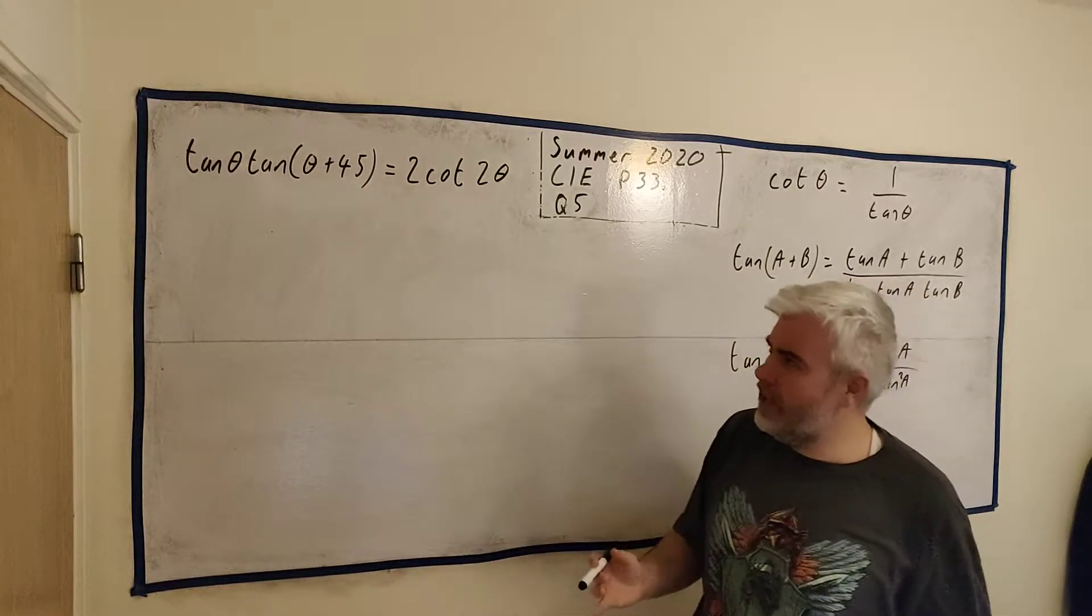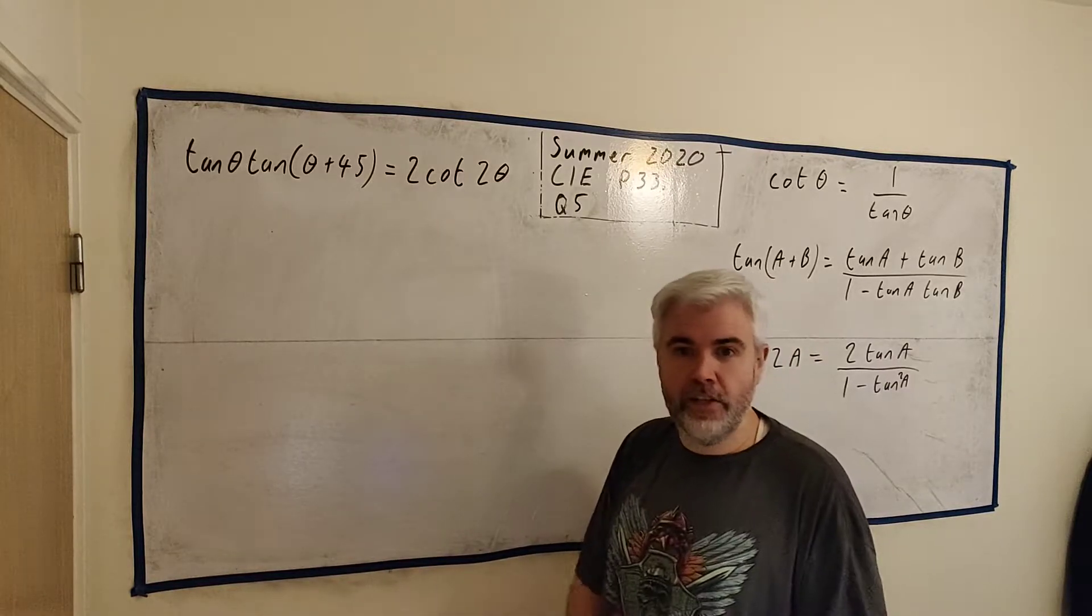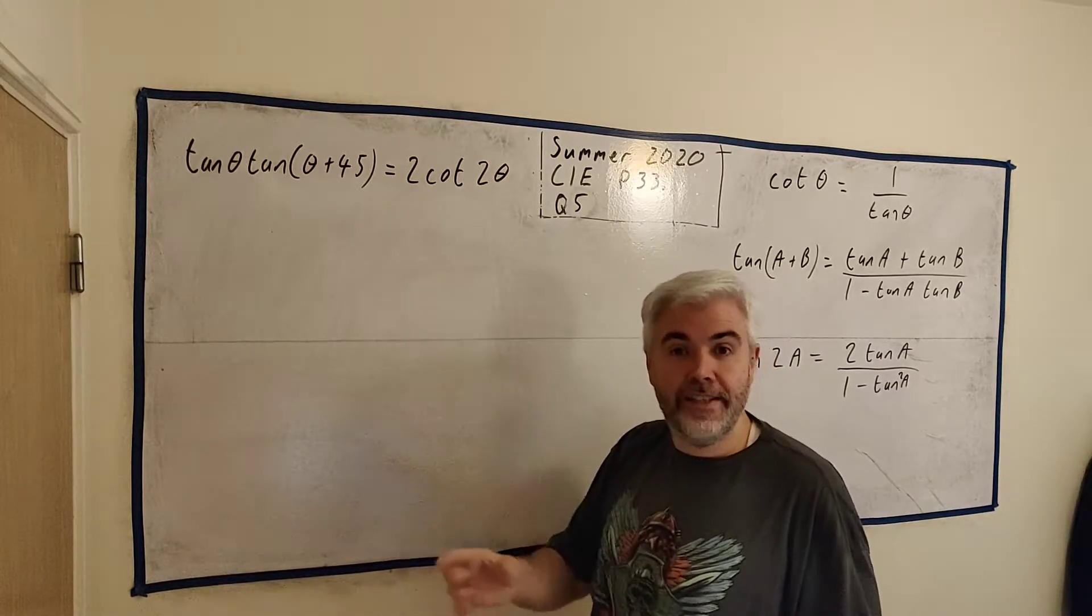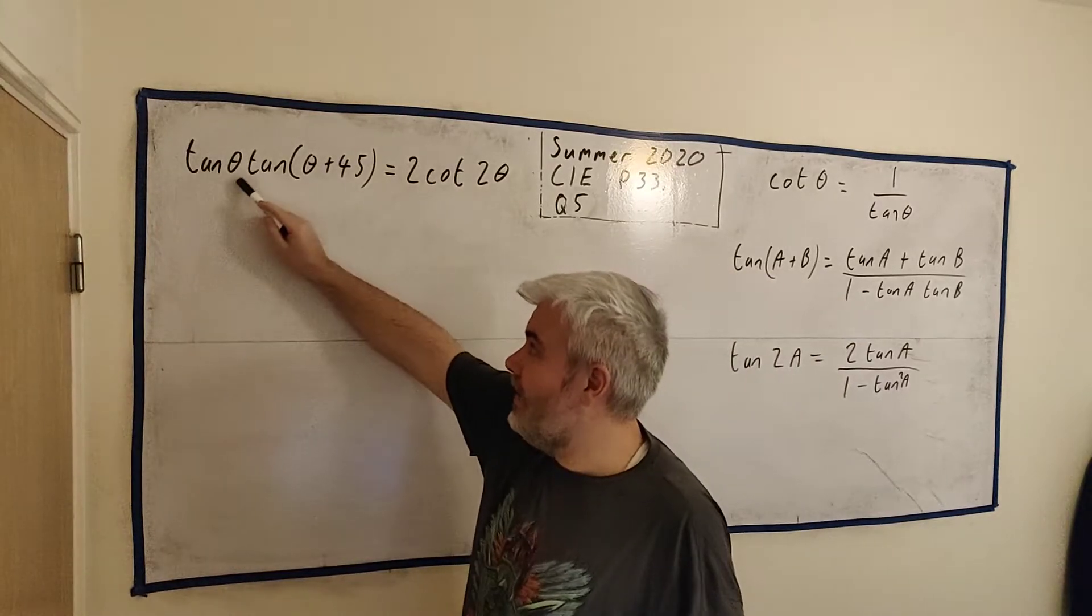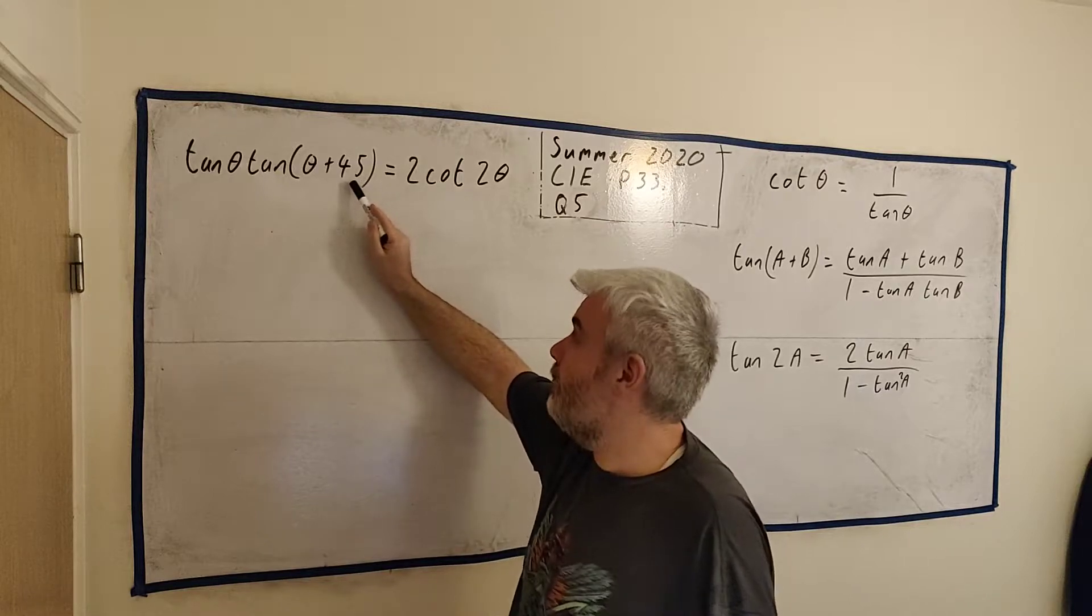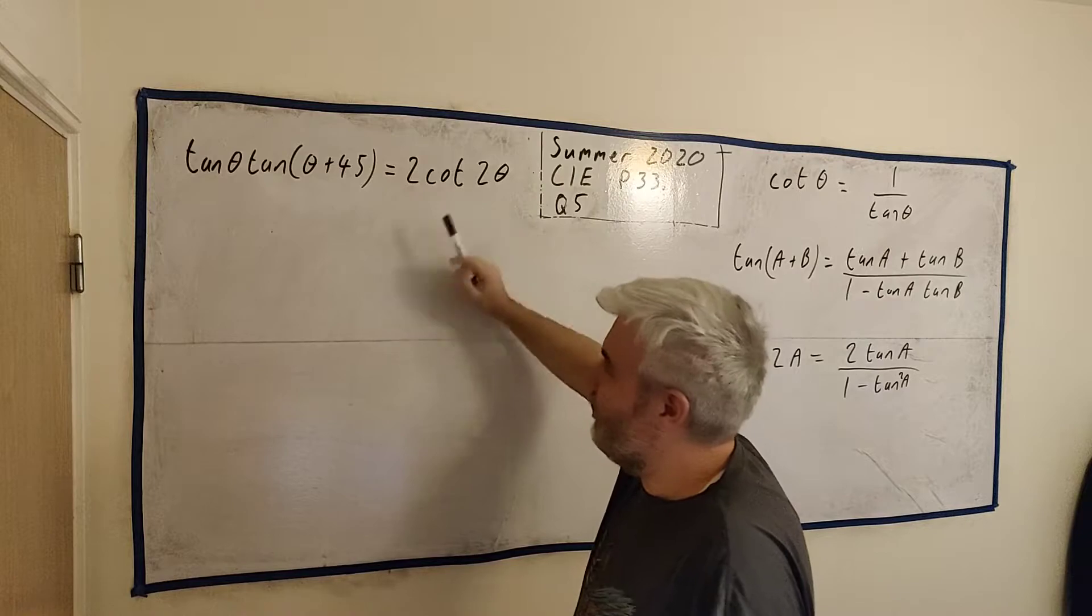Right so the first thing you need to do is really make it look like a quadratic and something I'd suggest is to get lots of things that are the same. Now many things are different here we have a tan θ we have a tan (θ + 45) they're different and we have a cotangent 2θ all very different.